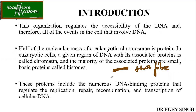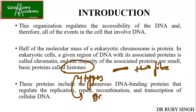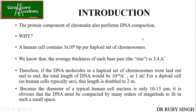The associated proteins are nothing but histones, of which there are four types. These four types in duplicates form the octamer. These proteins include numerous DNA binding proteins that help in replication, repair, recombination, and transcription of cellular DNA. The protein component of chromatin also performs DNA compaction, which is important because if DNA were stretched out, replication and other functions would be very difficult.